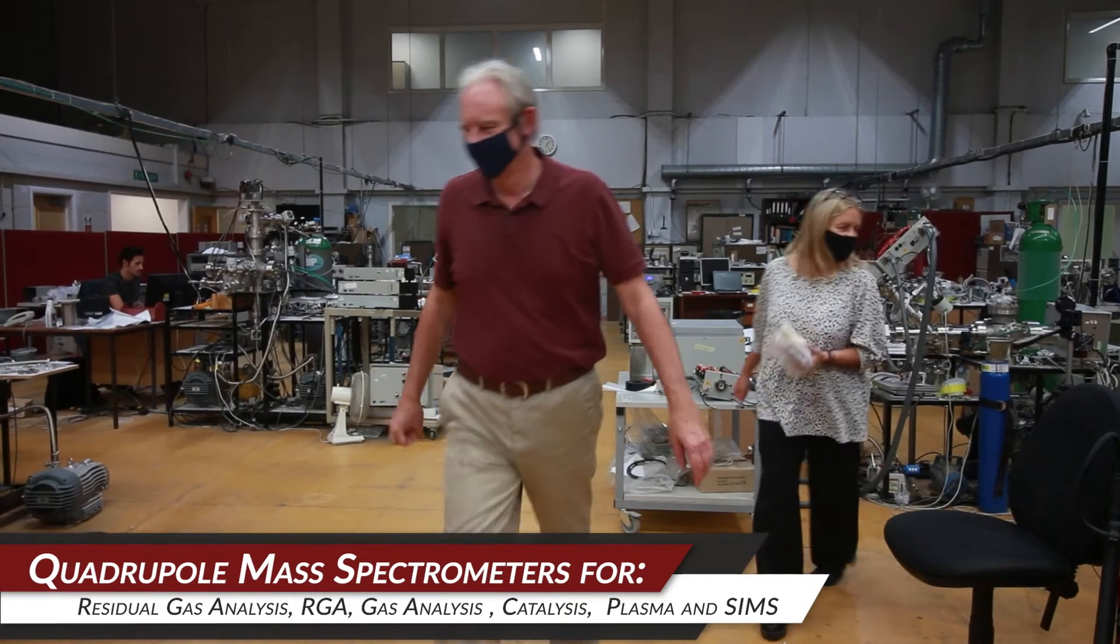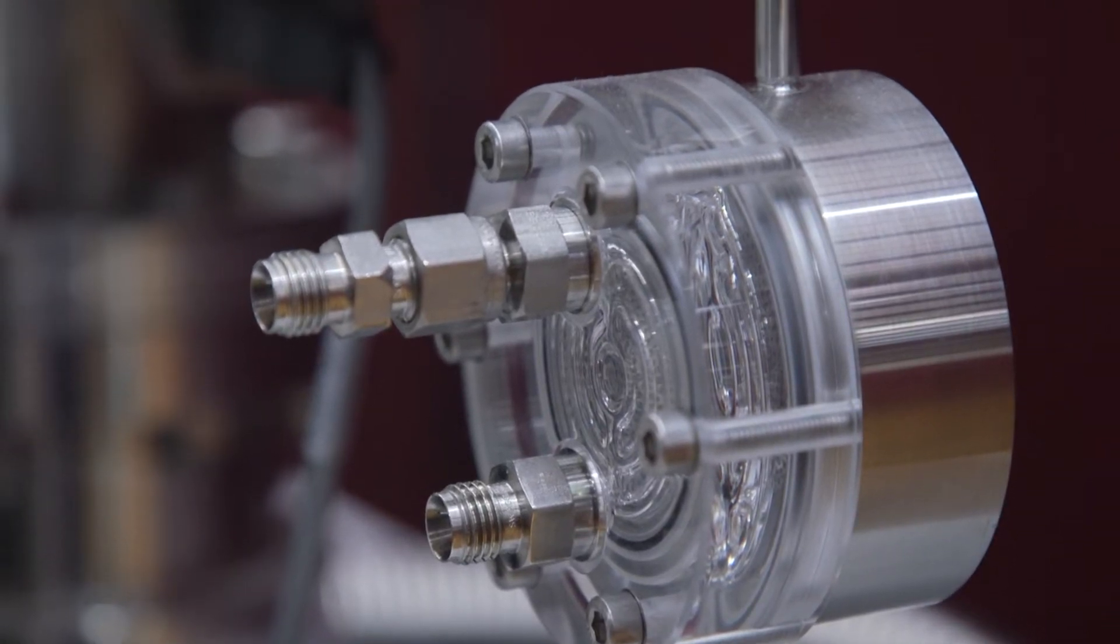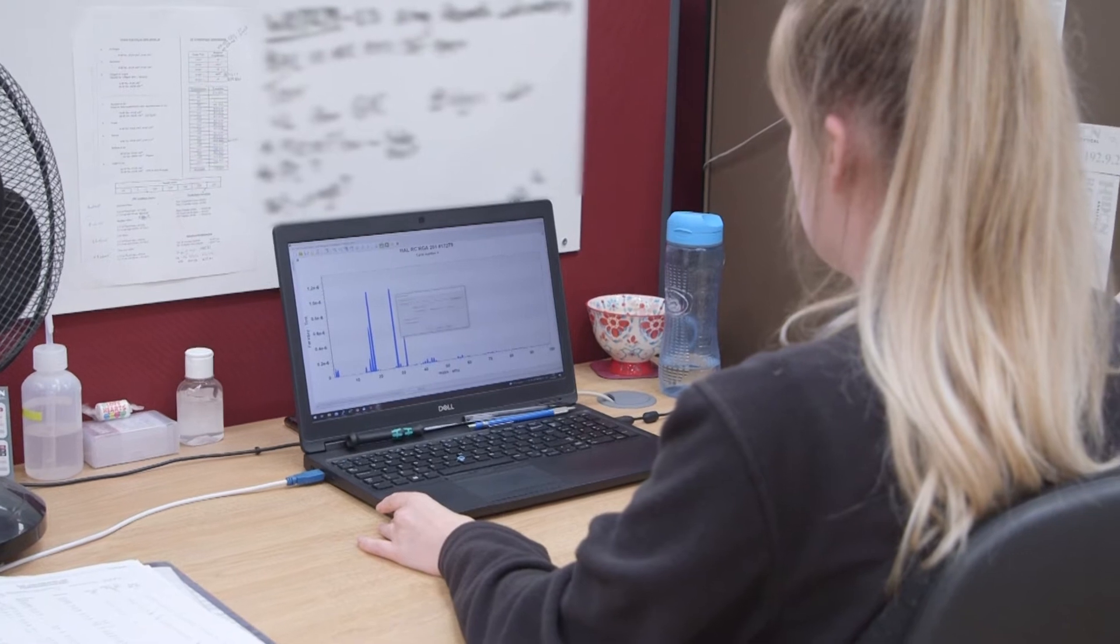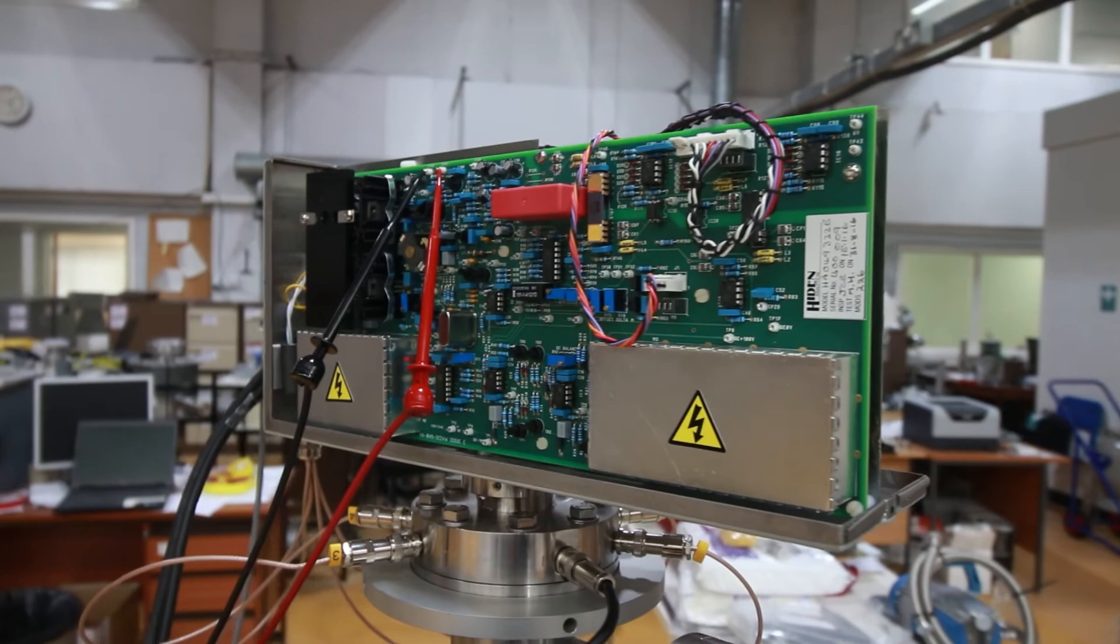The quadrupole mass spectrometer is a powerful sensor. It has extremely wide dynamic range, high sensitivity and very fast data acquisition speed. These are the features that make it so powerful. We designed the quadrupole mass spectrometer into our products to maximize the potential of the sensor for the application and to deliver the results that our customers demand.